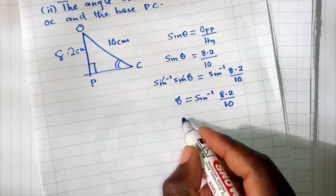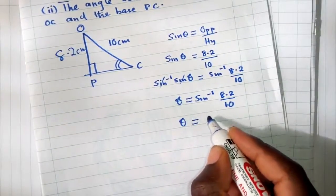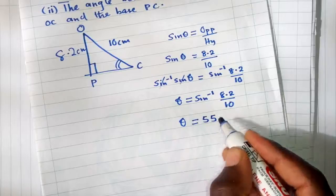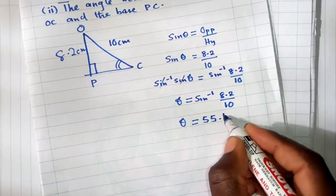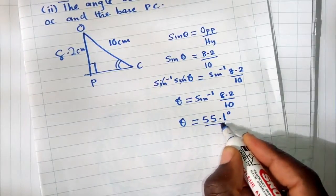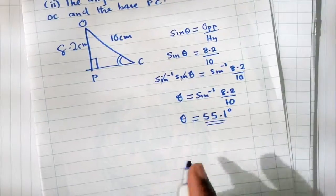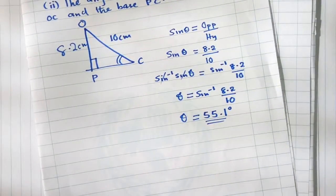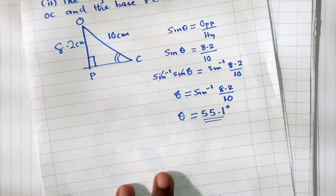So you can punch on your calculator. Once you punch, you get something like 55.1 degrees. So the angle is 55.1 degrees. Thank you very much for watching.